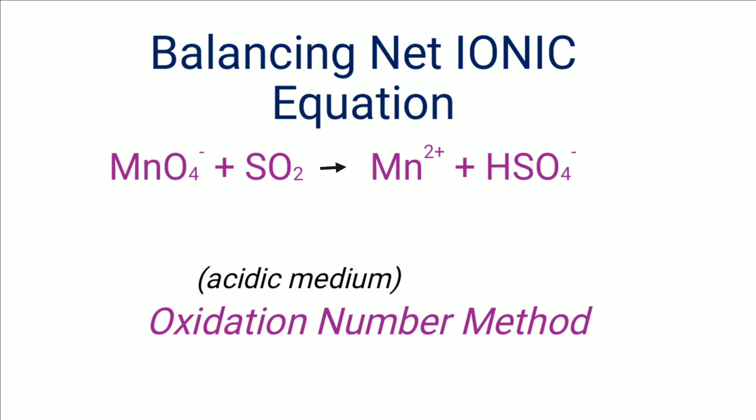Hello friends, let's balance one more net ionic equation. This equation is for the reaction between permanganate ion and sulfur dioxide to form manganese ion and hydrogen sulfate ion, or bisulfate ion. This reaction takes place in acidic medium. Let's balance this equation by the oxidation number method.